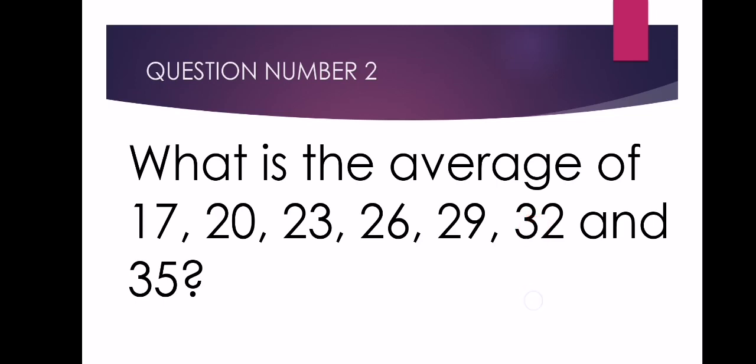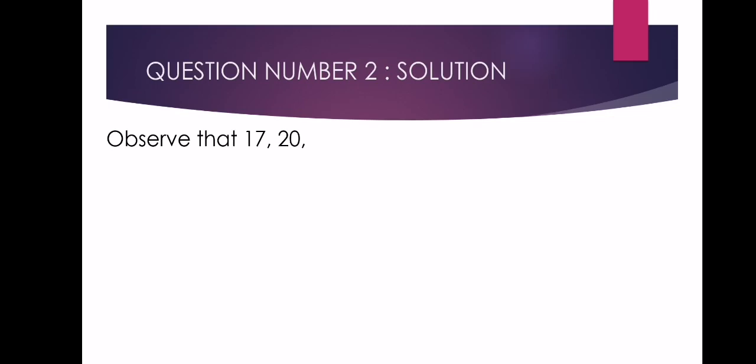This is the shortcut method I'll teach you to solve it quickly. Observe that 17, 20, 23, 26, 29, 32, and 35 are consecutive numbers with a common difference of 3.